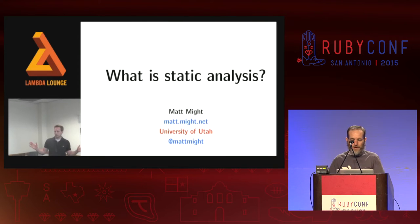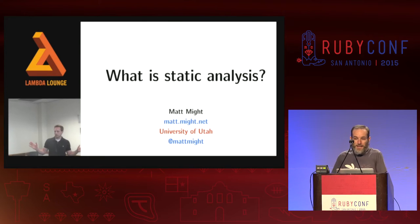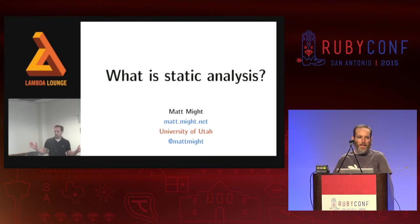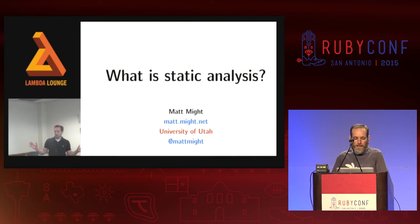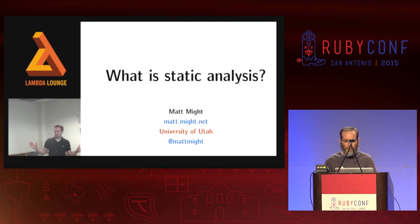There's a talk by a guy called Matt Might. He's a professor at the University of Utah, and the talk is called 'What is Static Analysis?' Quite early on, he gives a general formula for how we write a static analysis tool like a static type analyzer. He says what we do is we take an interpreter and we make it more abstract.